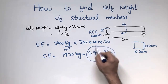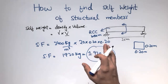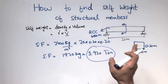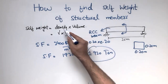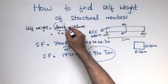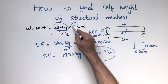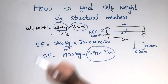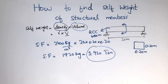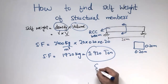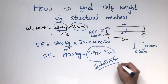So this is the way to calculate the self-weight for a beam. I hope you guys understand how to find the self-weight for any structural member. First, you should know two quantities: the density of the material your structural member is composed of, and the volume of the structural member. By multiplying these two, you will get the self-weight of any structural member. Please subscribe to my channel for civil engineering videos. Thank you for watching.